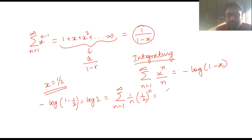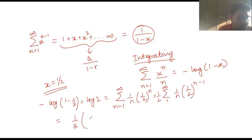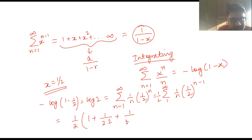Taking 1/2 outside, this gives (1/2) times the sum from n=1 to infinity of (1/n)·(1/2)^(n-1), which expands as (1/2)·[1 + 1/(2·2) + 1/(3·2²) + 1/(4·2³) + ...].